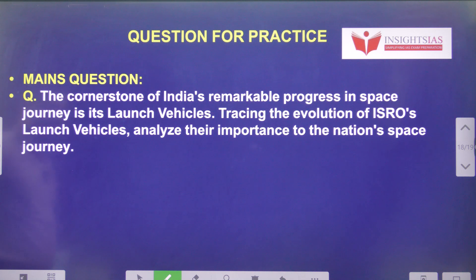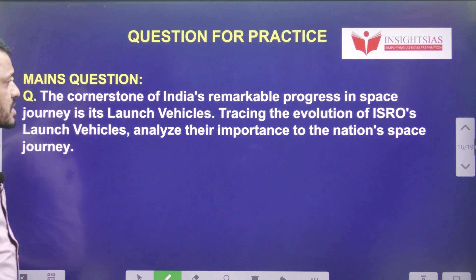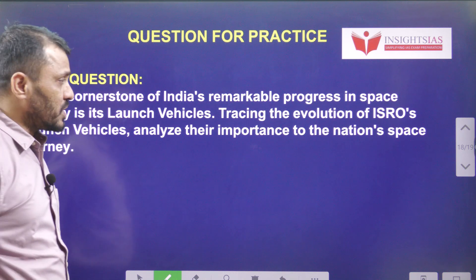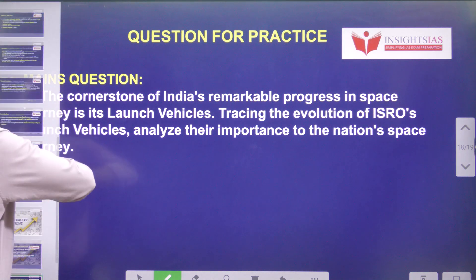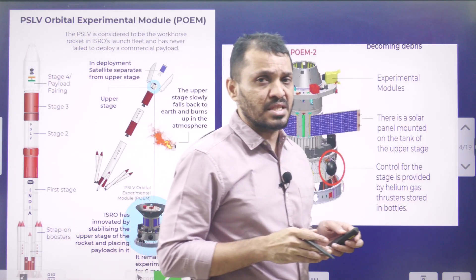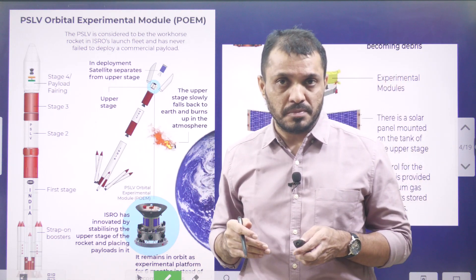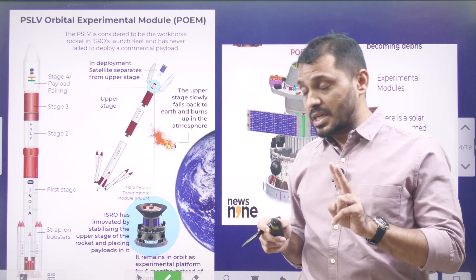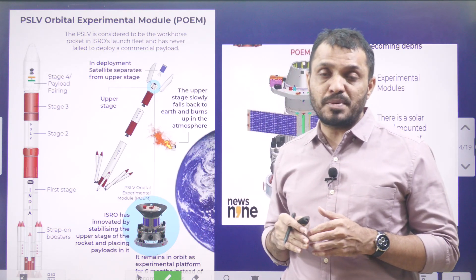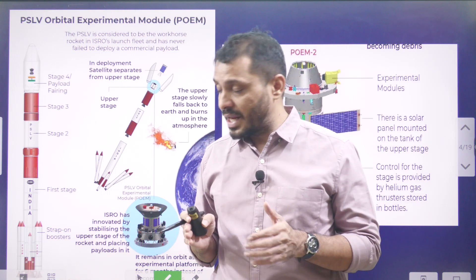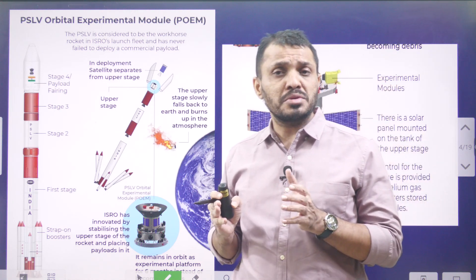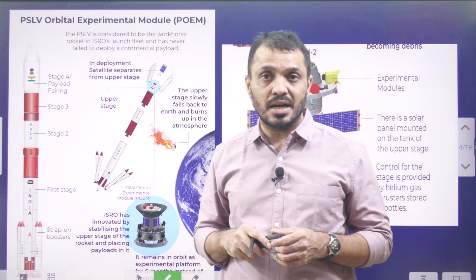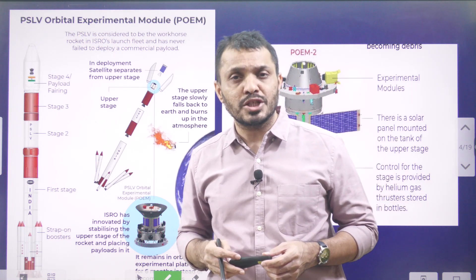The cornerstone of India's remarkable progress in its space journey is its launch vehicles. Today's main question: trace the evolution of ISRO's launch vehicles and analyze their importance to the nation's space journey. In this video we mainly discussed POEM 3 — what this platform is about, its advantages: first it's reusable, and second it leaves less space debris while enabling many experimental satellites to conduct research in space. We also discussed XPoSat and dedicated space missions related to X-rays. Thanks for watching, have a great day, Jai Hind.